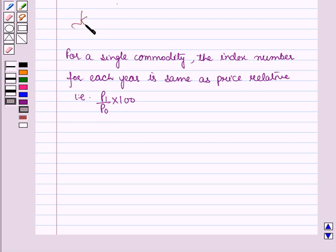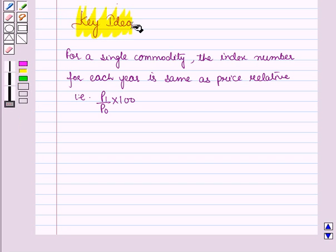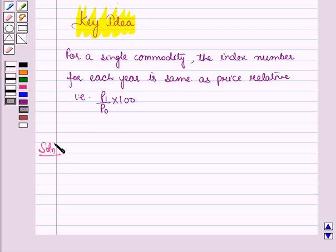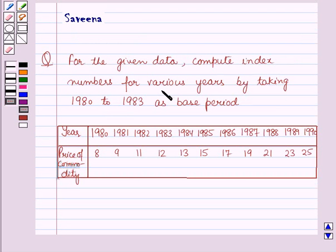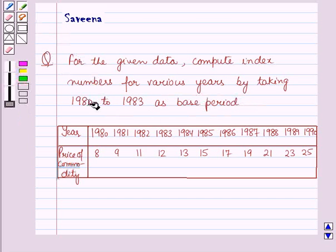This result will work as a key idea for solving this question. Now we will start with the solution. For the given data we have to compute the index numbers for various years by taking 1980 to 1983 as the base period.